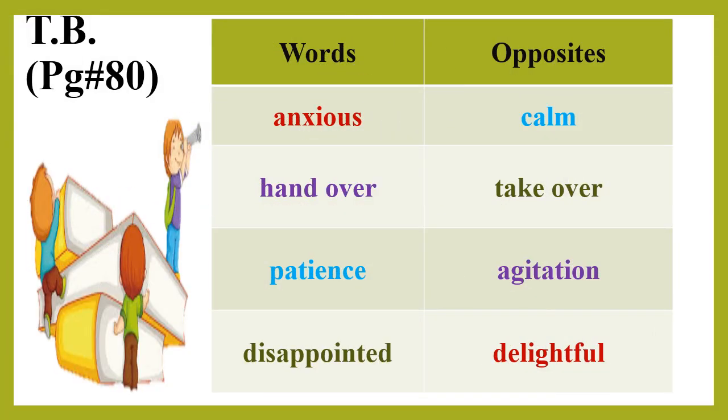On textbook page number 80 we have some word opposites. The first word is anxious and its opposite is calm. Next word is hand over and its opposite is take over. Next is patience and its opposite is agitation. The last word is disappointed and its opposite is delightful.